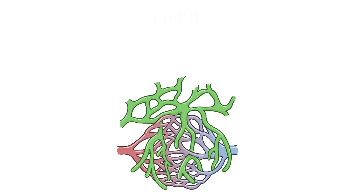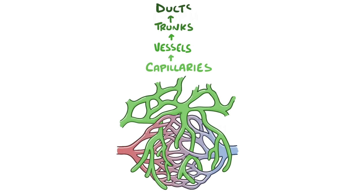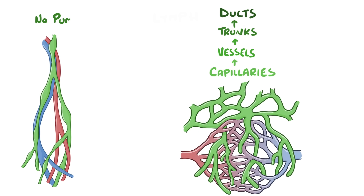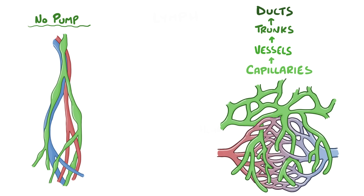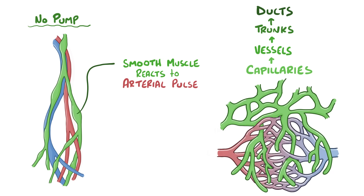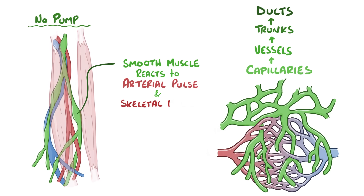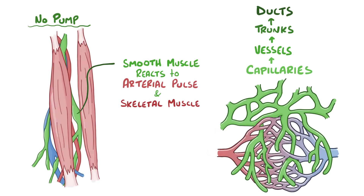Once lymph is inside the lymphatic capillaries, it travels through bigger and thicker-walled vessels, then trunks, and then ducts. There's no pump pushing the lymph through the lymphatic system. Instead, smooth muscle in the lymph vessels reacts to the pulsing of nearby arteries by squeezing to get things started, and then the squeezing of skeletal muscles, which normally contract throughout the day, exert external pressure to keep the lymph flowing along, eventually reaching a nearby lymphatic trunk.